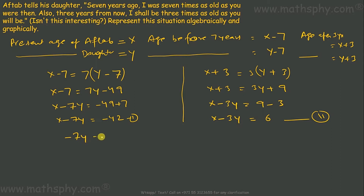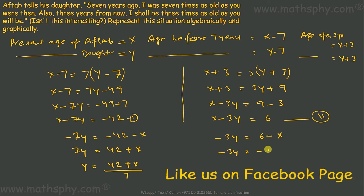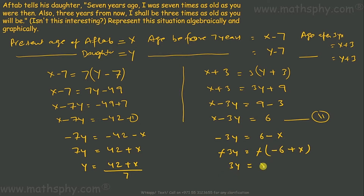Now let's convert these to graph form. From the first equation, X minus 7Y equals negative 42, rearranging gives Y equals (42 plus X) over 7. From the second equation, X minus 3Y equals 6, rearranging gives Y equals (X minus 6) over 3. So we have Y₁ equals (42 plus X) over 7, and Y₂ equals (X minus 6) over 3.